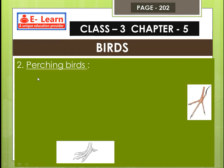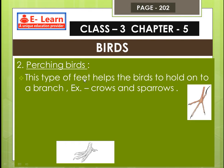Number 2: perching birds. This type of feet helps the birds to hold onto a branch. For example, crows and sparrows. These feet help them grip and perch on branches of trees.